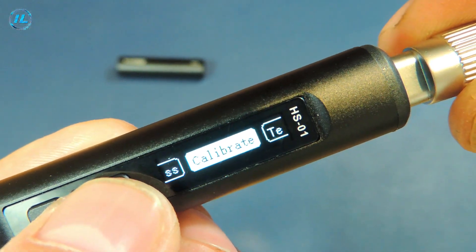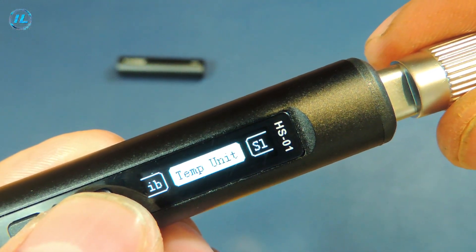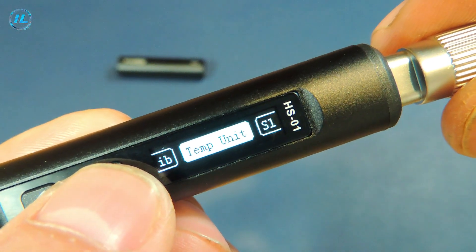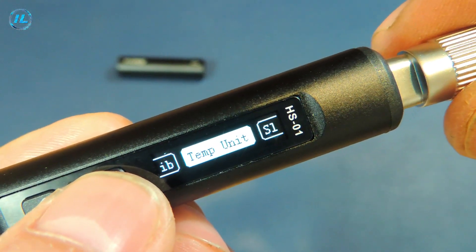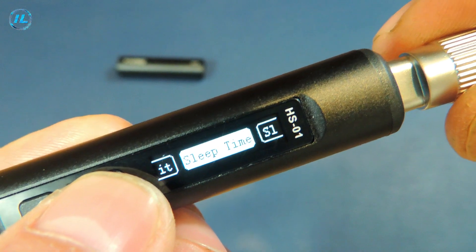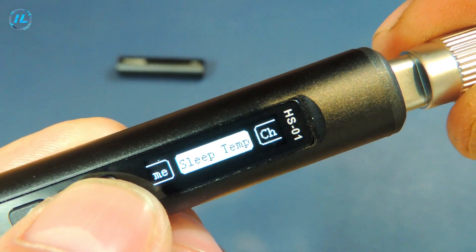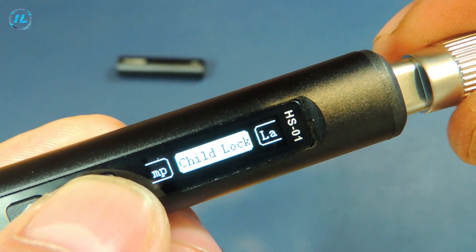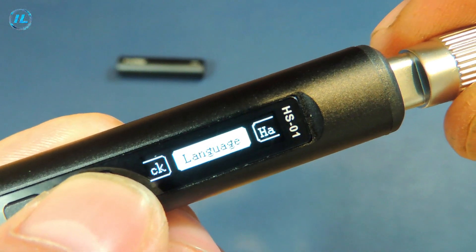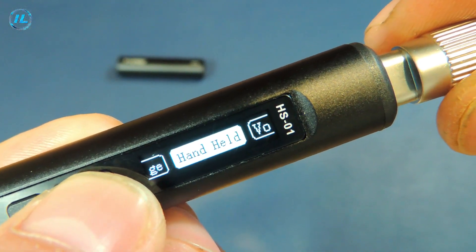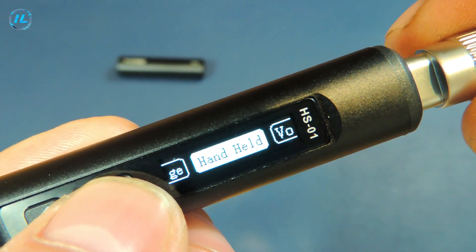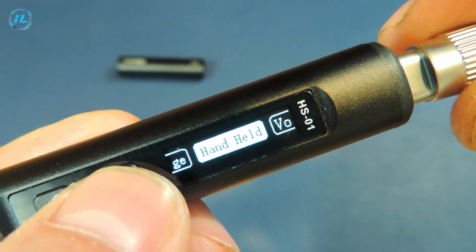Then the temperature calibration, temperature display in degrees Celsius or Fahrenheit, the time of transition to sleep mode, the temperature in sleep mode, protection from children, system language, and switching modes for people with a right or left working hand.